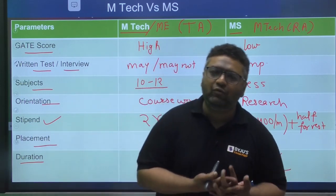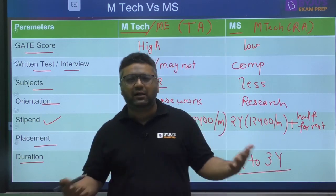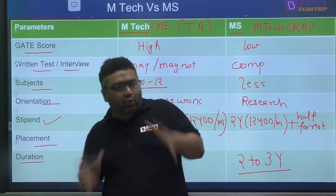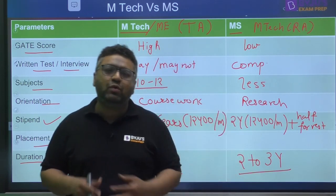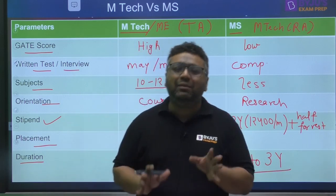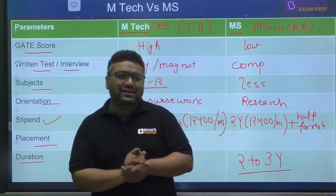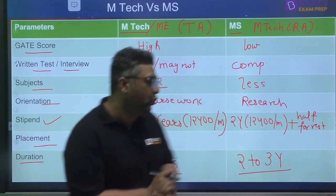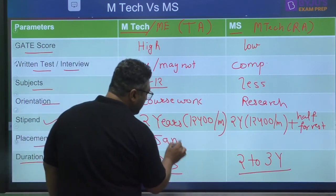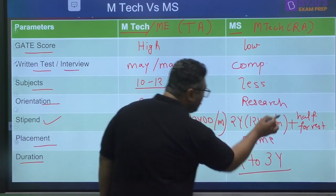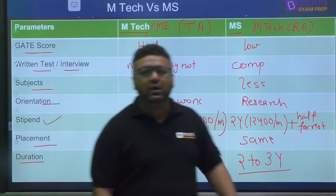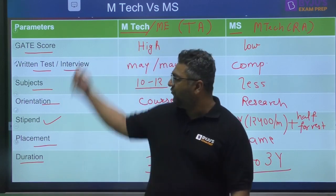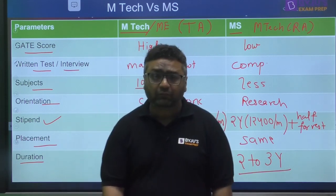Regarding placements: both TA and RA are treated as master's degrees, so placement-wise they are generally considered the same. For R&D roles, companies may give some preference to RA candidates, but it is not a hard rule. However, MS does not have a fixed 2-year completion guarantee, which can sometimes be a concern for placement timelines.